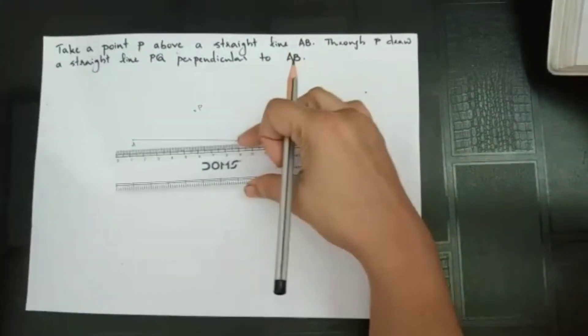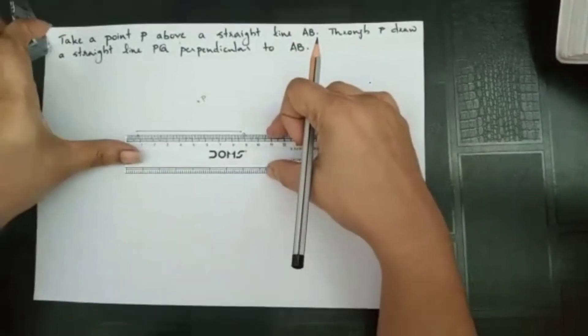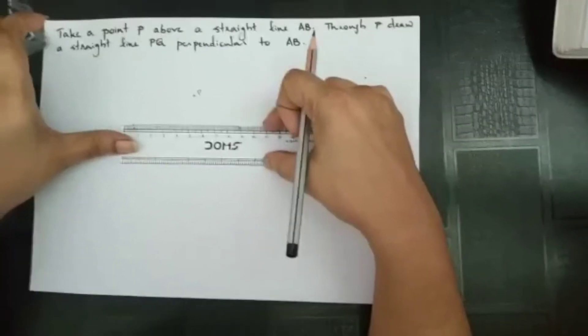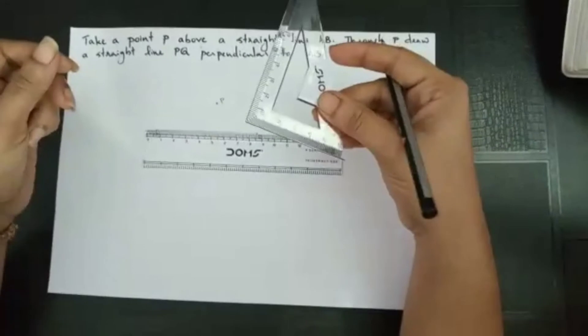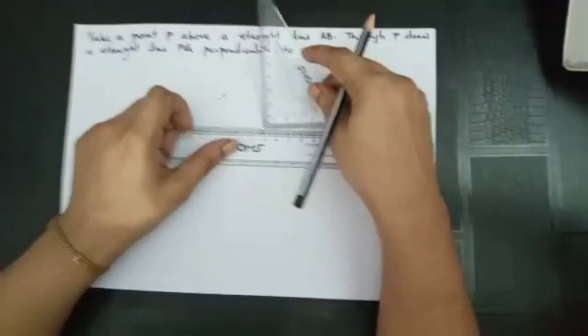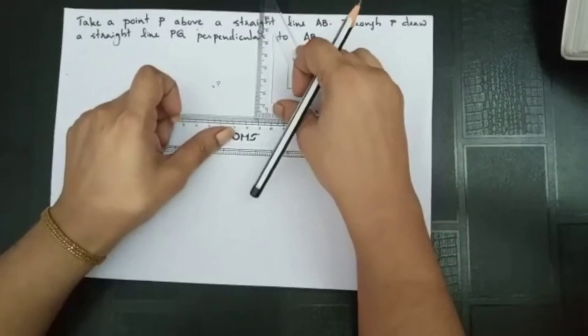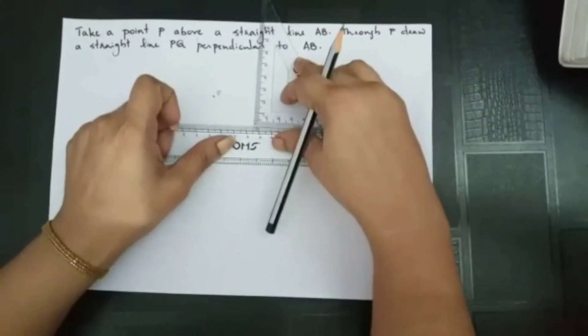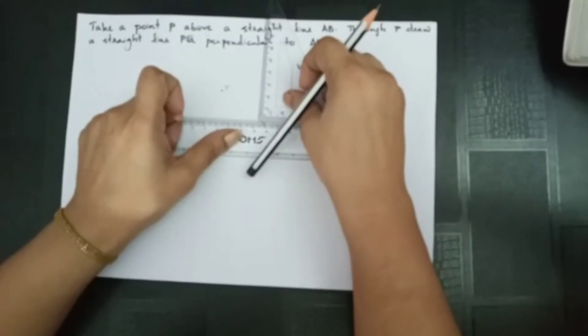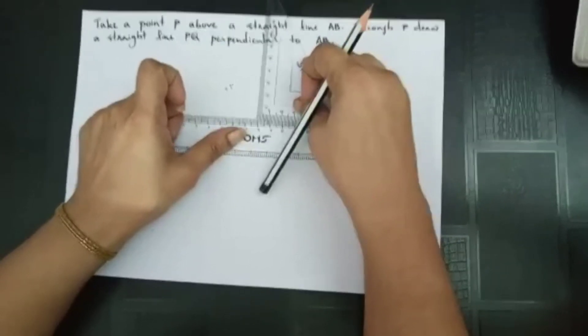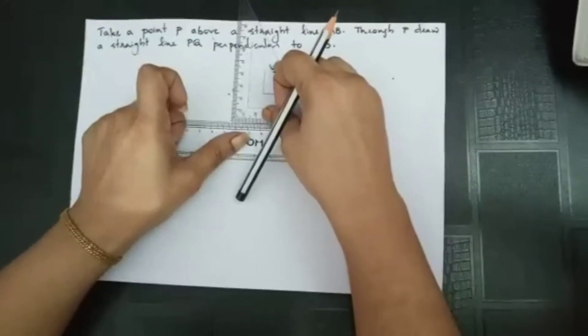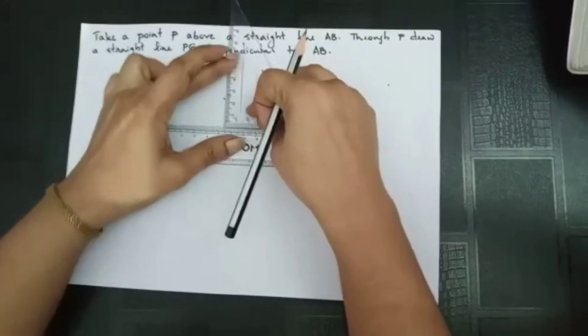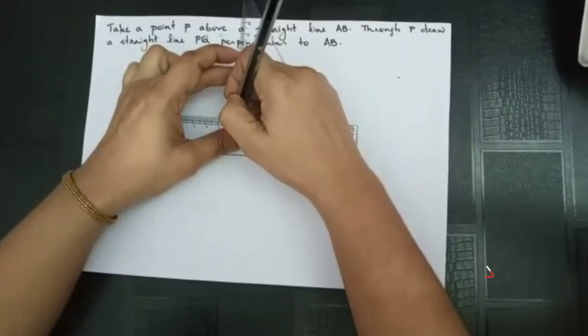So the first thing is, you have to keep your straight ruler like this along your straight line. Then here is your set square. You have to keep here and slide it along AB, slide the set square along AB so that its edge is always in contact with the straight line. And when it touches the point P, you can draw the line.